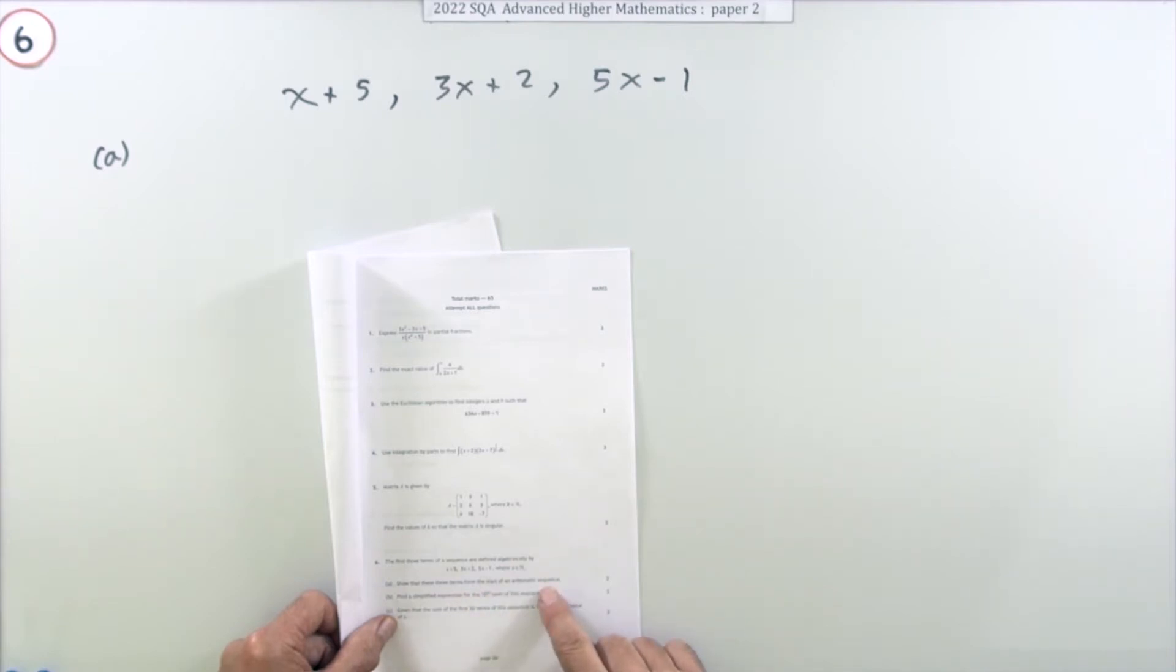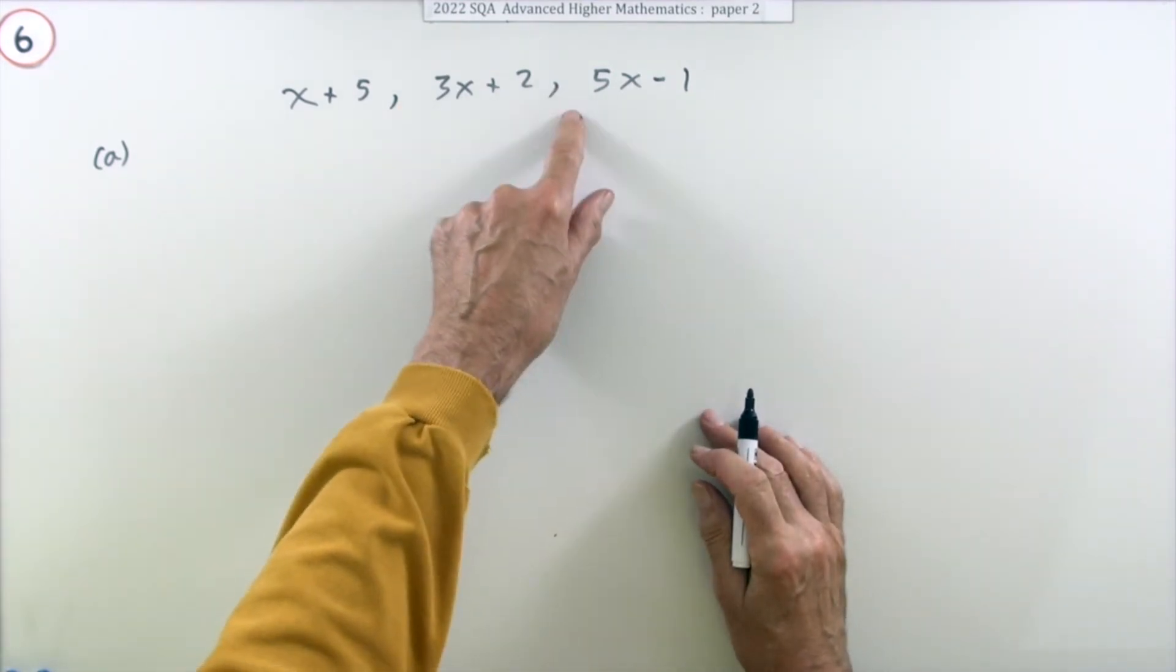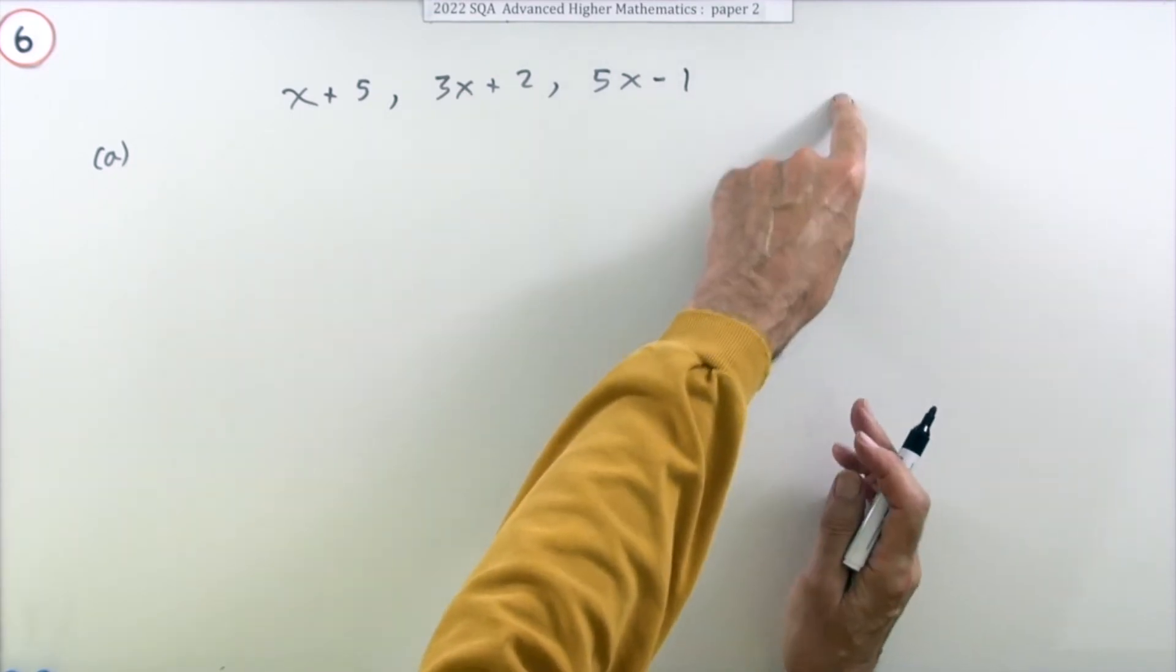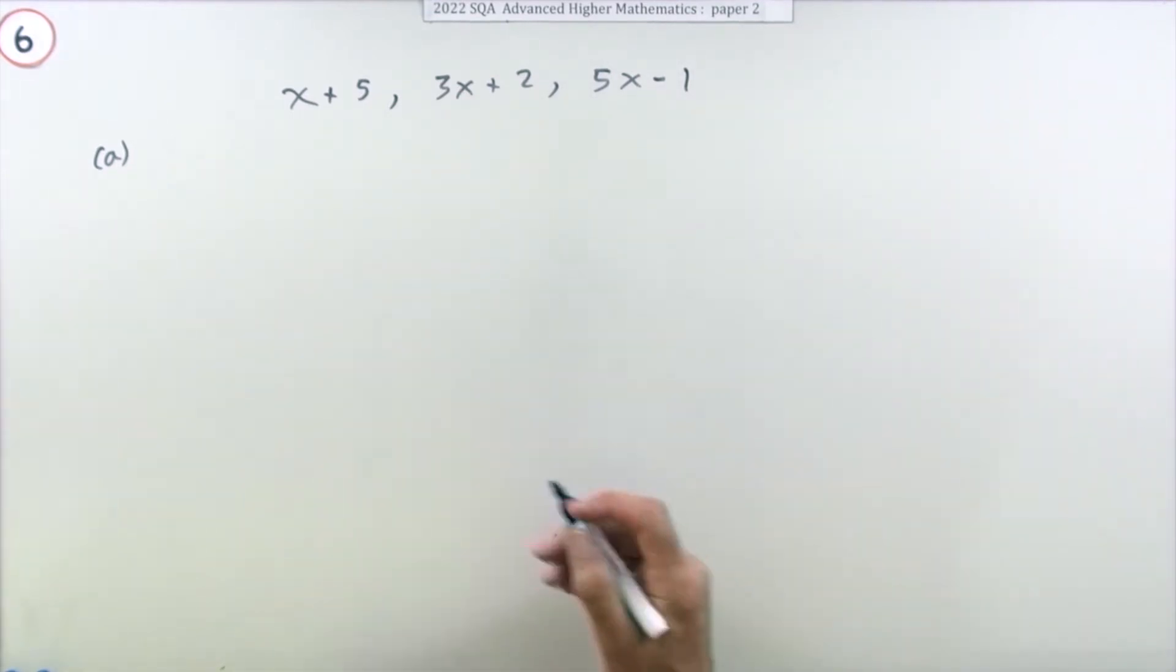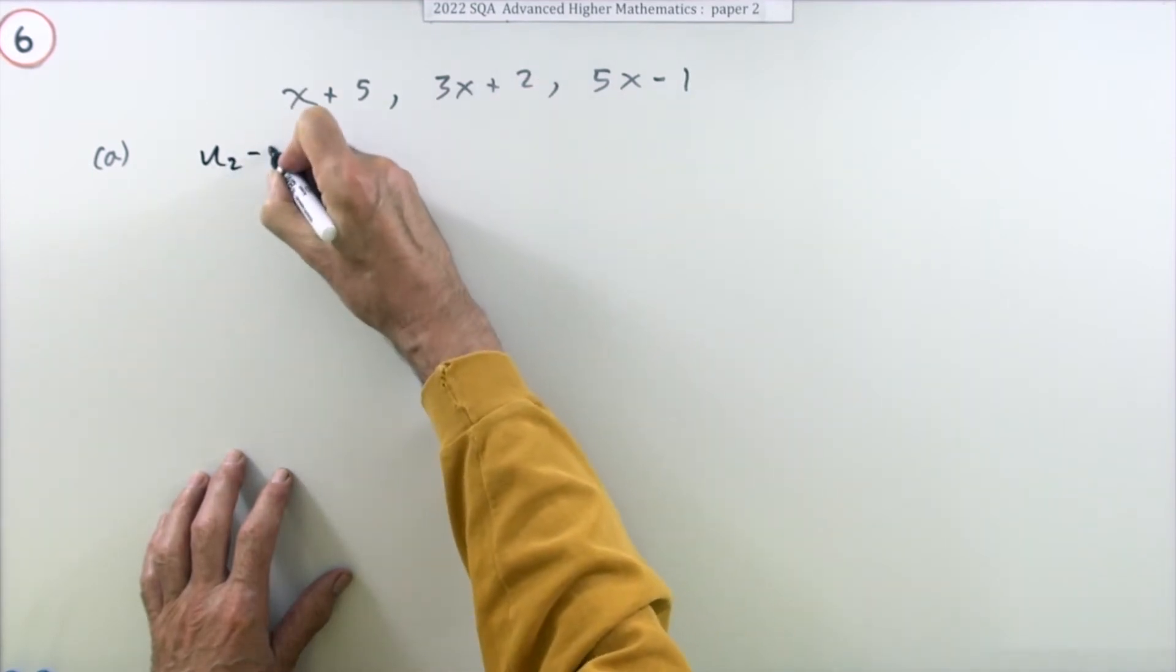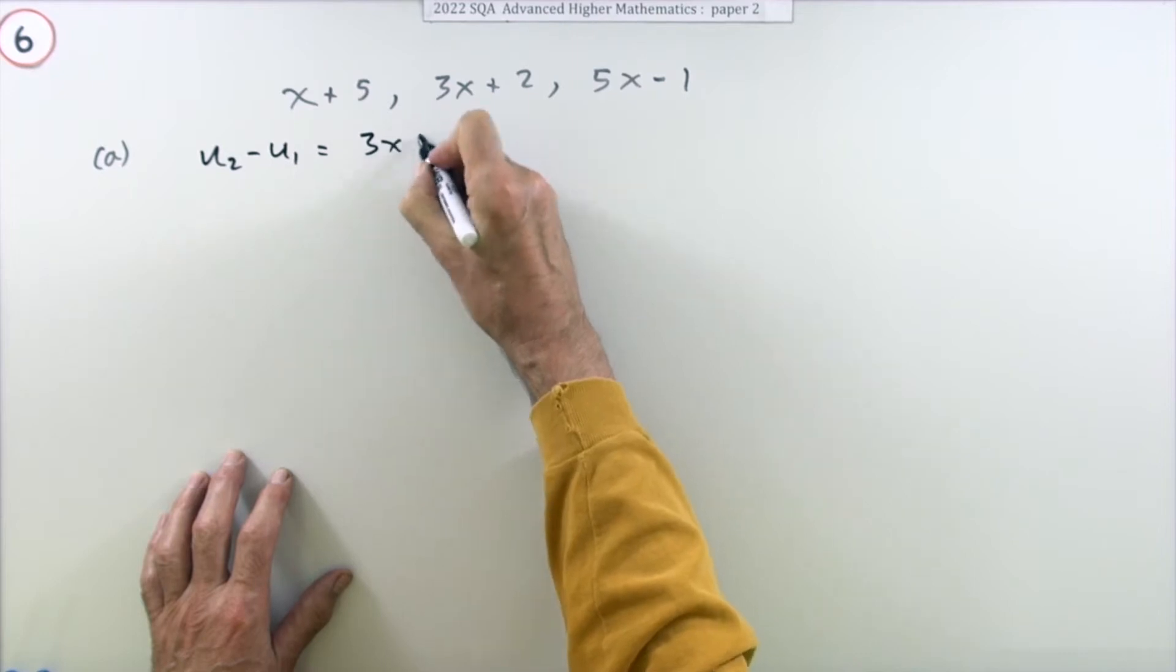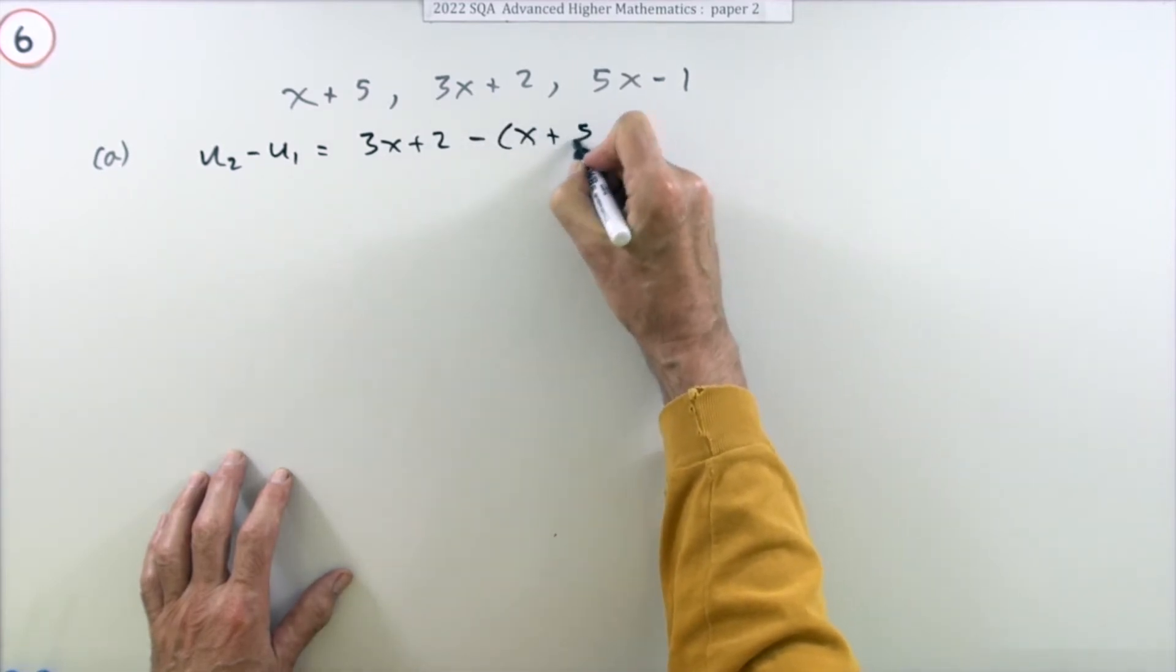It says show that these three terms form the start of an arithmetic sequence. Well, it'll be an arithmetic sequence if there's a common difference - if you always keep adding the same amount each time to get the next one. So the way to do that is just check what's been added.